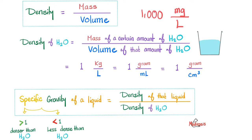Now I understand density, but what is specific gravity? Specific gravity is basically the density of that liquid relative to that of water. If the density of the liquid is higher than the density of water, then the entire ratio will be greater than 1. But if it's less than that of water, then the ratio will be less than 1. So when you find that the specific gravity is greater than 1, it means that this liquid is denser than water. But less than 1 means less dense than water.